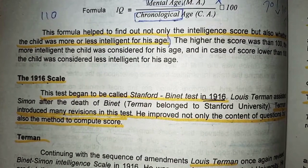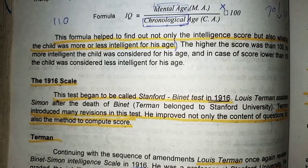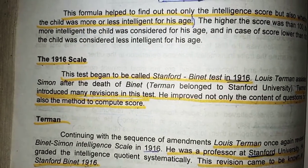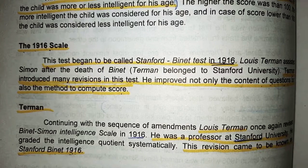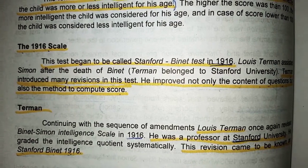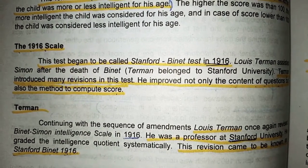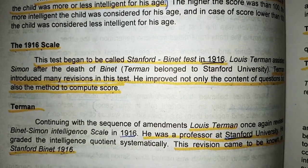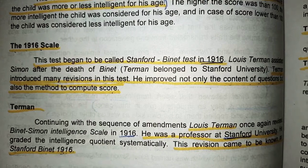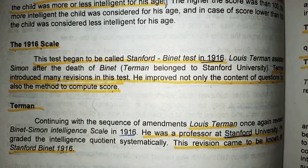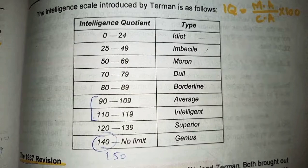In 1916, after Binet's death, Stanford University professor Lewis Terman decided to use the Binet test. He improved the content and the scoring method. The revised Binet-Simon test of 1916 became known as the Stanford intelligence scale.